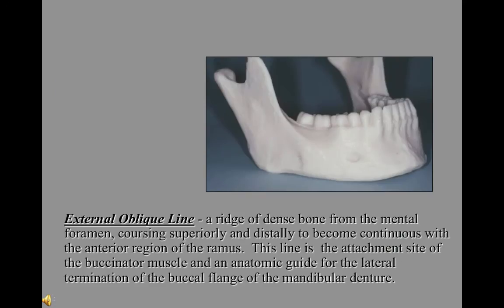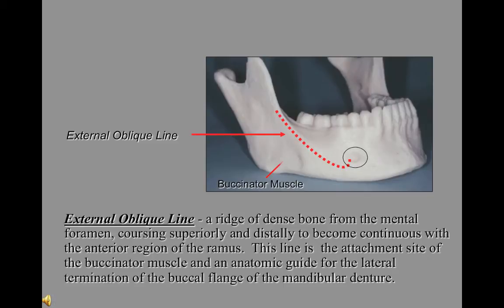The external oblique line is a ridge of dense bone from the mental foramen coursing superiorly and distally to become continuous with the anterior region of the ramus. This line is the attachment site of the buccinator muscle and an anatomic guide for the lateral termination of the buccal flange of the mandibular denture.